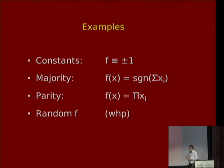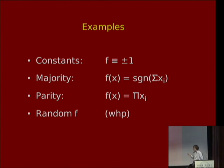The majority function's expectation is zero — it's equally likely to be plus or minus one on a random input. If you fix a constant number of input bits, even all to one, it still won't change the expectation by more than little-o of one. Another good example is the parity function, which you can write as just the product of all the bits. Its expectation is zero, and you can't change the expectation from being zero unless you fix all of the bits. Pseudo-random functions also have this property with high probability.